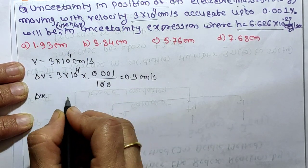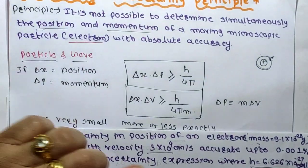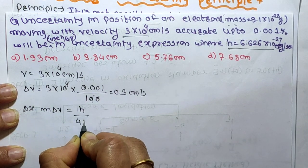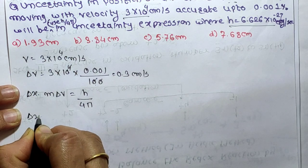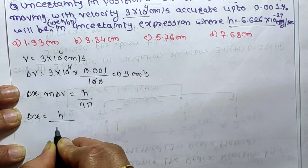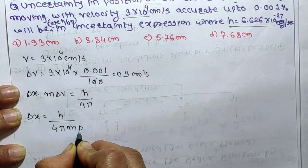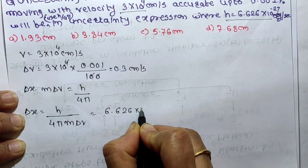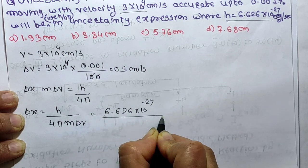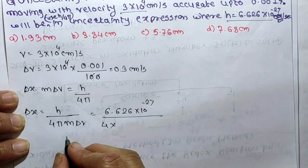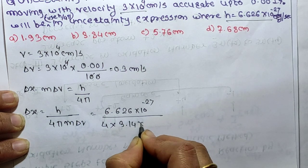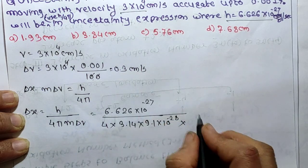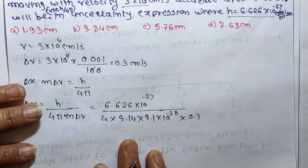We have the formula delta x into delta p ≥ h upon 4 pi. Since delta p equals m into delta v, we get delta x equals h upon (4 pi m delta v). Substituting values: h = 6.626 into 10 raise to minus 27, divided by 4 into 3.14 into 9.1 into 10 raise to minus 28 into 0.3. The exponent: minus 27 and minus 28 gives minus 1 in the power difference, contributing to the calculation.